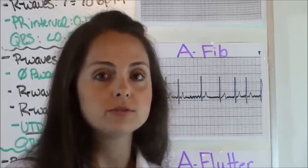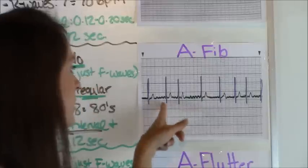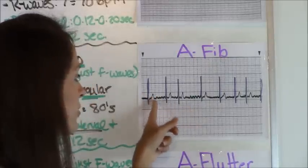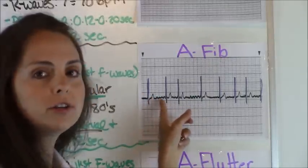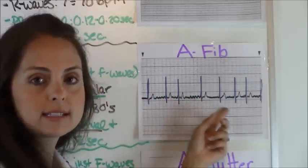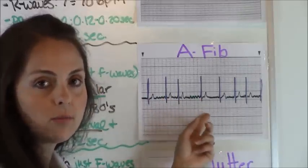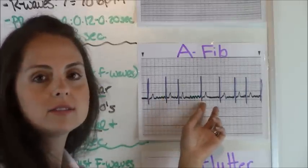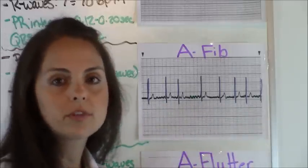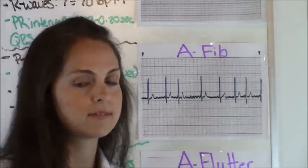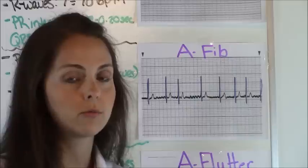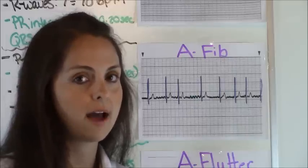So let's go over atrial fibrillation. Using the five steps we went over, we're going to look at this rhythm. Whenever you look at this rhythm, all you can see are your QRS complexes and T waves. And in between that, you see these little squiggly lines. Some people may interpret those as P waves — those are not P waves. They're called fibrillatory waves, which are called F waves.